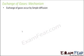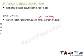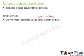Exchange of gases occurs by simple diffusion. Diffusion is the process by which substances move along a concentration gradient — from a region of high concentration towards a region of low concentration. For gases, the gradient followed is the pressure gradient. So oxygen and carbon dioxide move from a region of higher pressure towards a region of lower pressure.